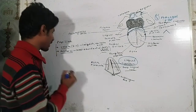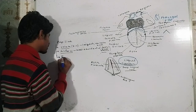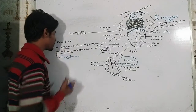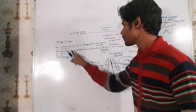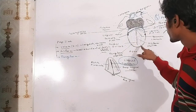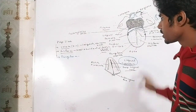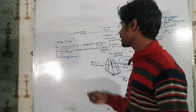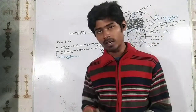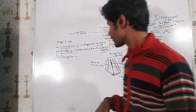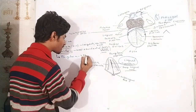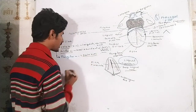Another type is the fungiform papillae. They are somewhat larger than the filiform papillae but smaller than the vallate papillae. The fungiform papillae are present in the apex region or tip of the tongue. They are called fungiform because they look like a fungus — specifically a mushroom — with a narrow neck and a larger head. Each fungiform papilla has five taste buds.